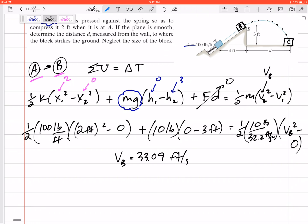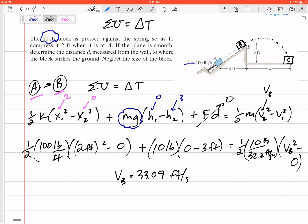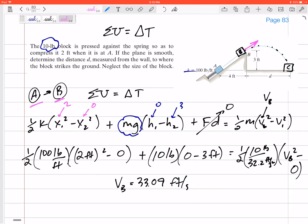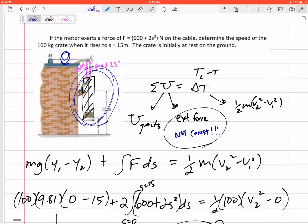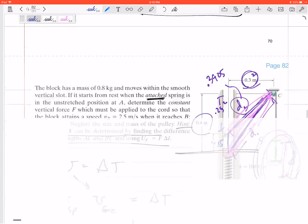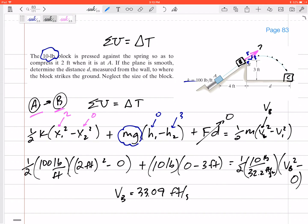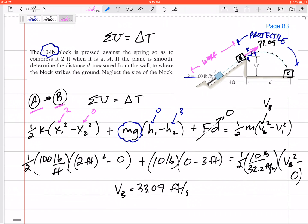Now, now that I know it leaves the ledge, it leaves this incline at 33.09 feet per second, in this direction, right, it's leaving it in the direction of the incline, it's leaving it at this 4, 3, so the 4, 3, 5 direction, with a velocity of 33.09, now I can think about it as a projectile.